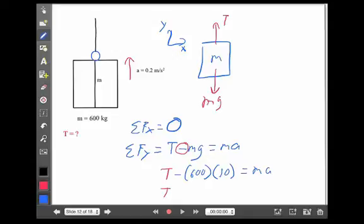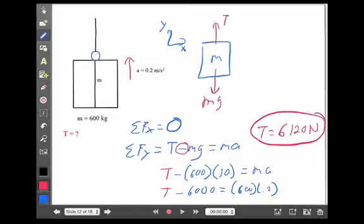So, tension minus 6,000, the mass 600, accelerating at 0.2, and that gives me a tension of 6,120 newtons. Now, let's think about why that makes sense. What's the weight of the elevator? Well, weight is mg, which in this case would be 600 times 10, or 6,000 newtons. Now, if you think about it, the cable needs to hold 6,000 newtons just to hold the elevator from falling. If I wanted to go upward now, I need something greater than 6,000 newtons. So, that's where that extra 120 comes from. An extra 120 upward allows the elevator to move, or accelerate, upward.